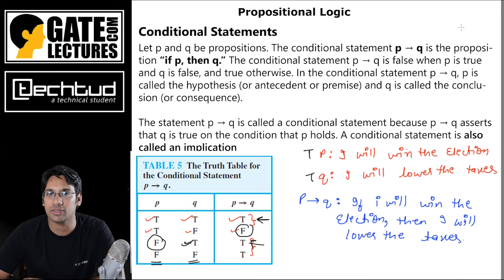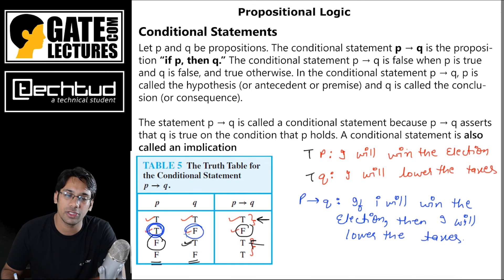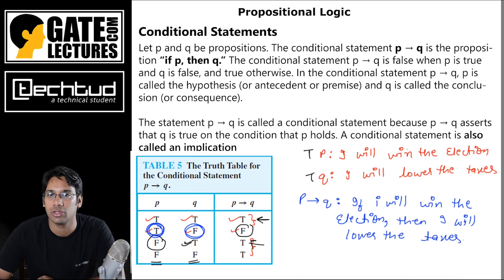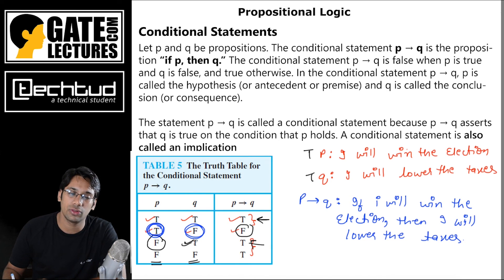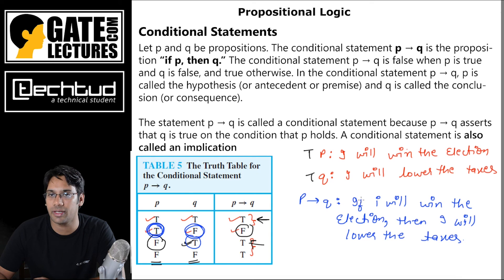In summary, the conditional statement p → q says: if p is true, then q must also be true. If p is true and q is not true, it returns false. If p is false, there is no constraint on q — whether q is true or false, the result is true. This can be confusing, so let us look at a few more examples of conditional statements.